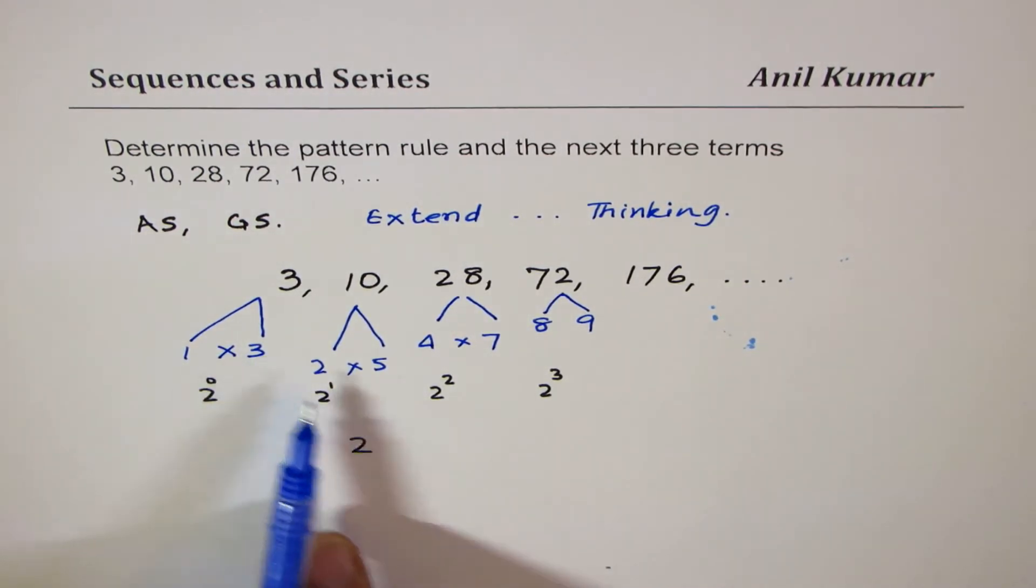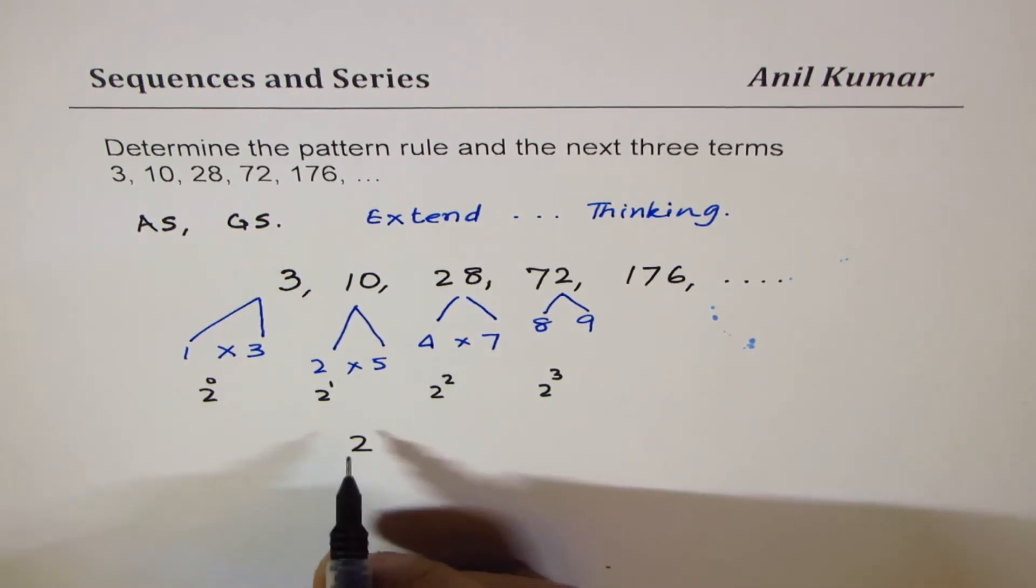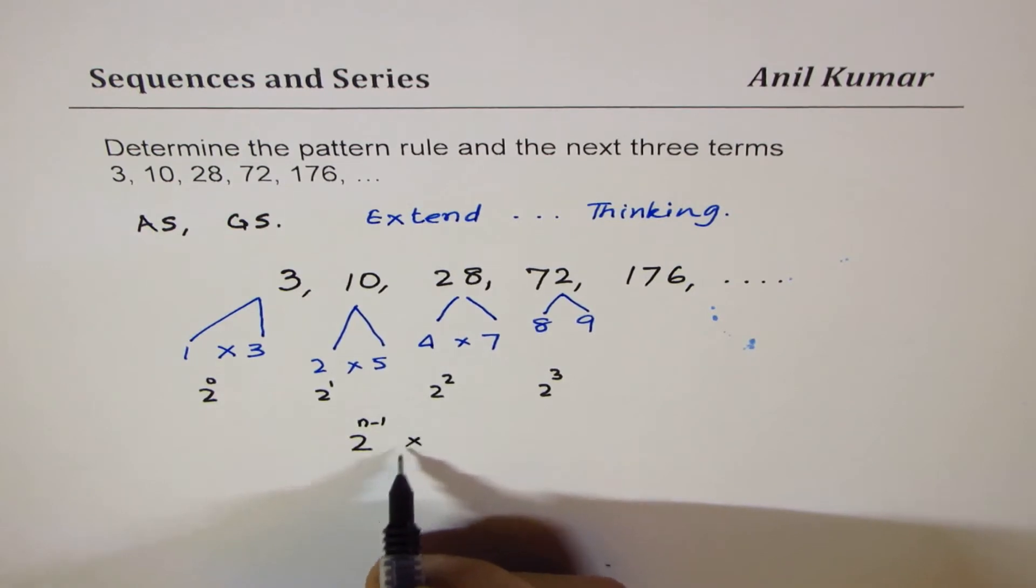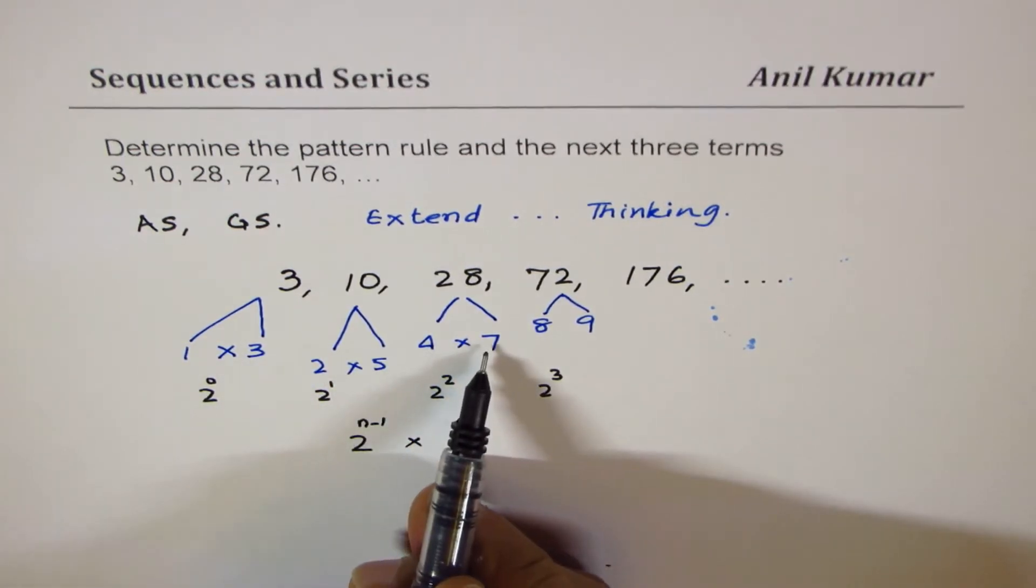Now, these odd numbers, 3, 5, 7, 9, also give you a pattern. So what we see here is that the first number is 2 to the power of n minus 1 is being multiplied by an odd number, 3, 5, 7, 9.